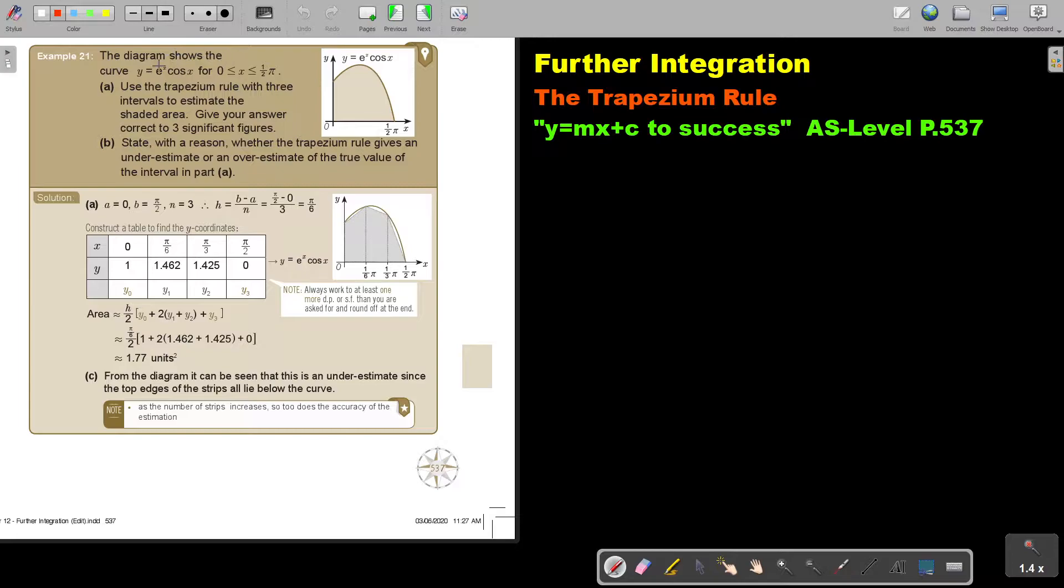Let's look at another example. The diagram shows the curve y is equal to e to the power of x cos x for x is bigger than 0 and smaller than a half pi. Use the trapezium rule with three intervals. Always very important to notice that. To estimate the shaded area, give your answer correct to three significant figures.